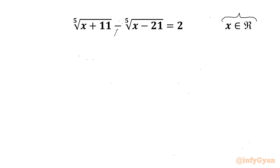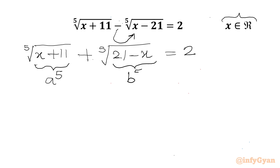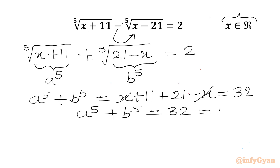Let us get started by taking the minus sign into the radical. We can write the equation as the 5th root of (x + 11) plus the 5th root of (21 - x) equal to 2. Now we will use substitutions: let the first radicand x + 11 equal a⁵, and the second radicand 21 - x equal b⁵. Adding a⁵ and b⁵ gives x + 11 + 21 - x = 32. So a⁵ + b⁵ = 32, which we can write as 2⁵.